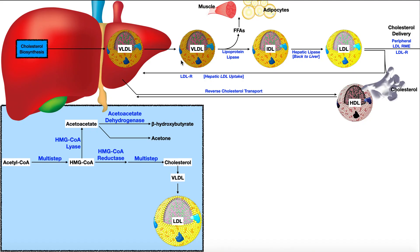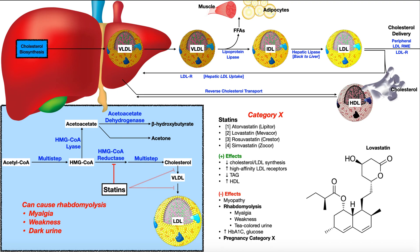So once we understand this, we can now start talking about some of the drugs. The first one is probably the most common one used today, and that is the statin drug. The way that you can recognize a statin drug is they end in 'statin.' So atorvastatin, lovastatin, rosuvastatin, simvastatin — these are all statin medications. And what are their effects?